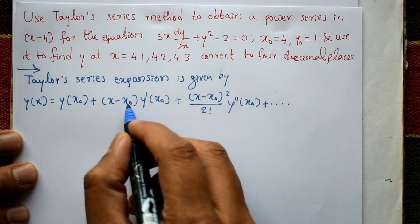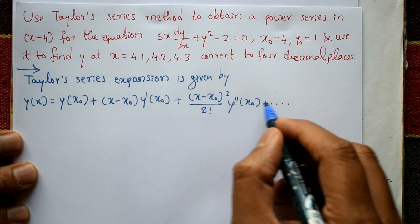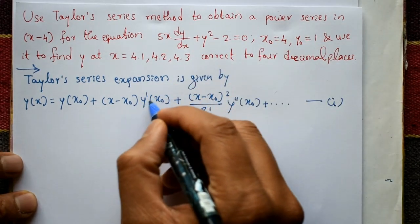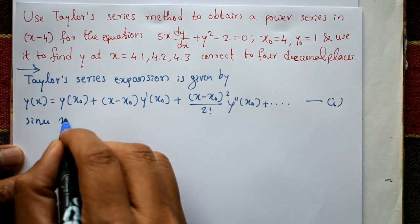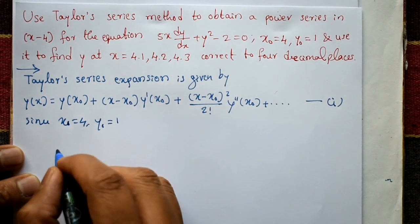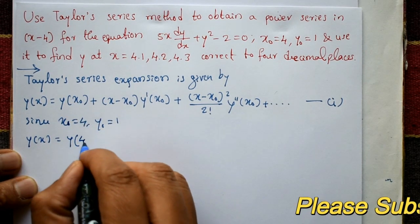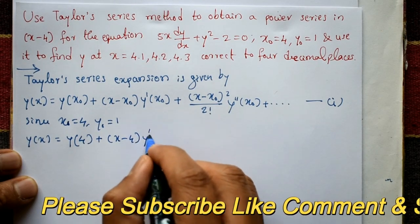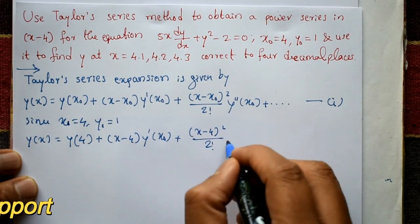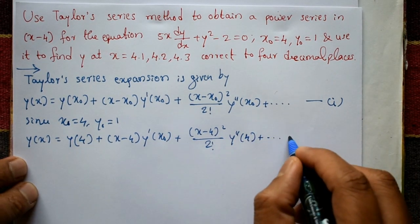The Taylor series expansion formula is: y(x) = y(x₀) + (x - x₀)y'(x₀) + (x - x₀)²/2! · y''(x₀) + ... — call this equation 1. Substituting x₀ = 4, this becomes: y(x) = y(4) + (x - 4)y'(4) + (x - 4)²/2! · y''(4) + ... — call this equation 2.